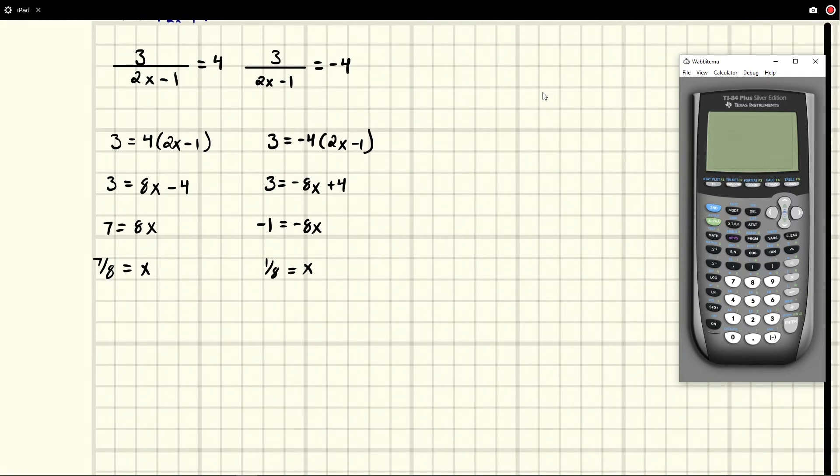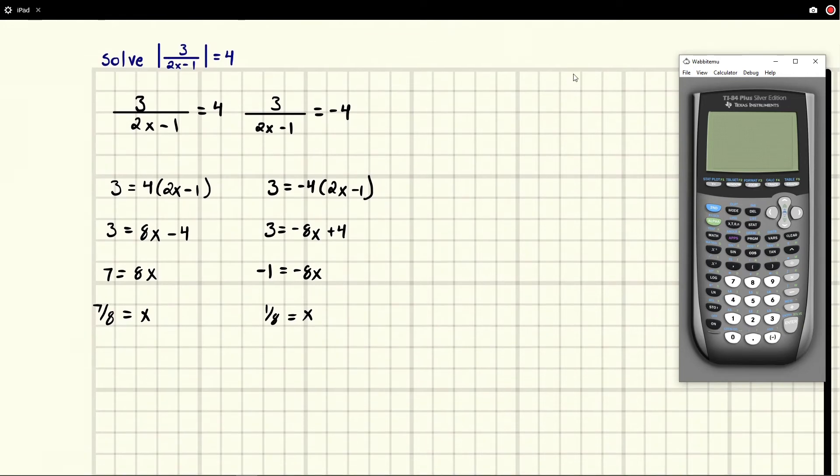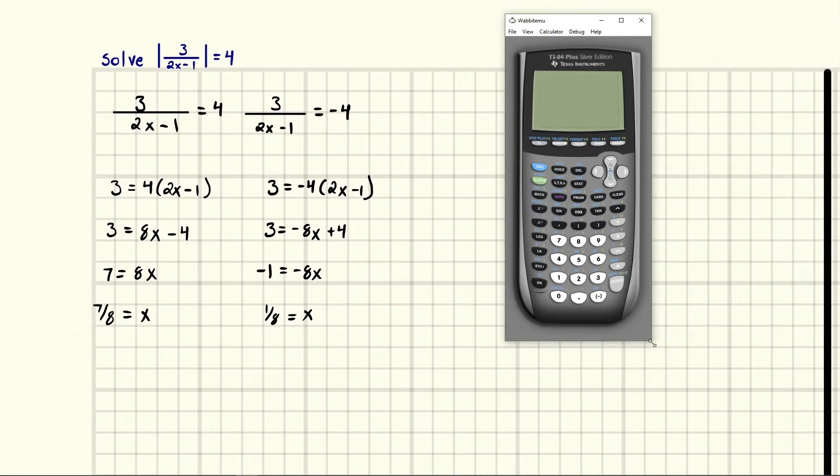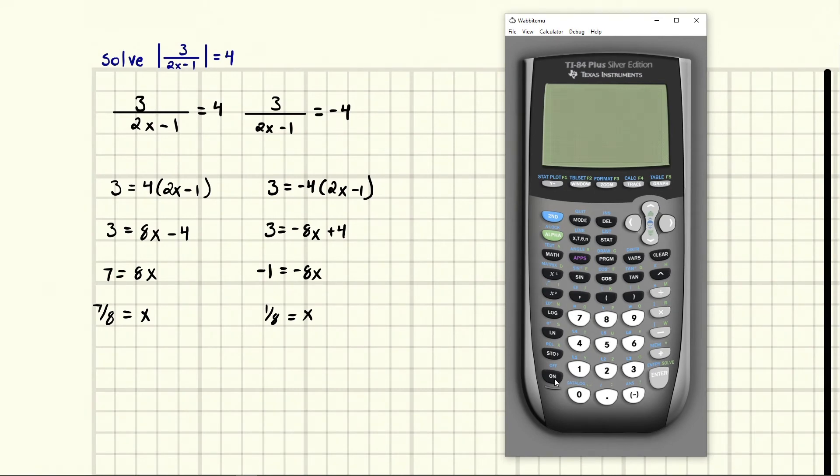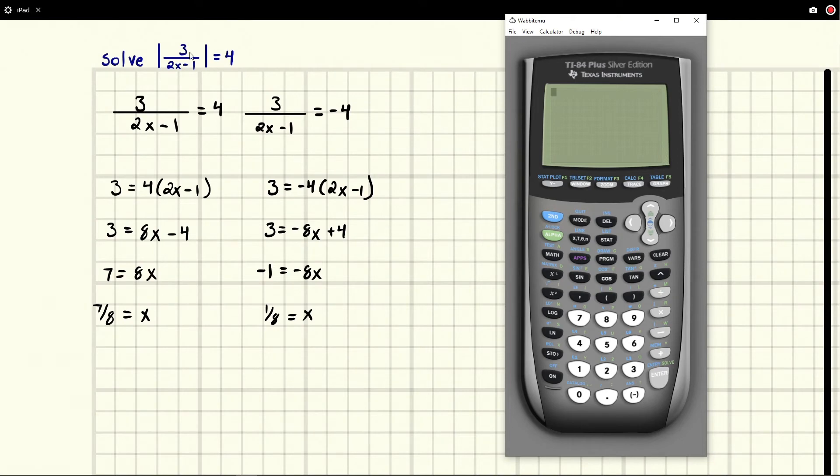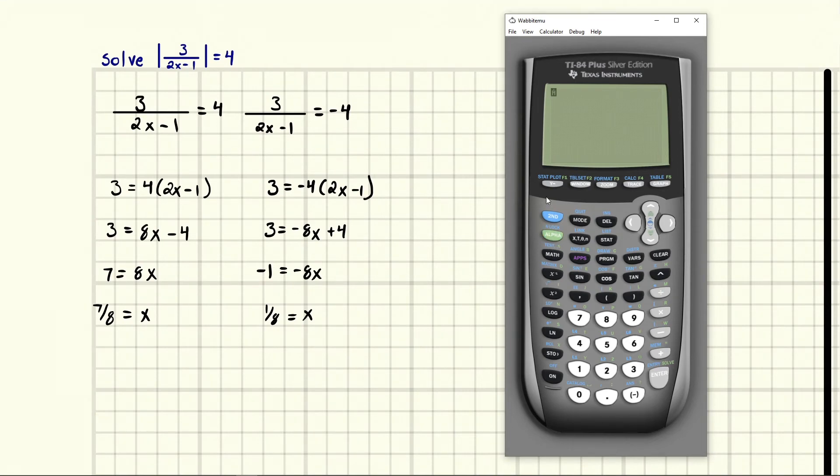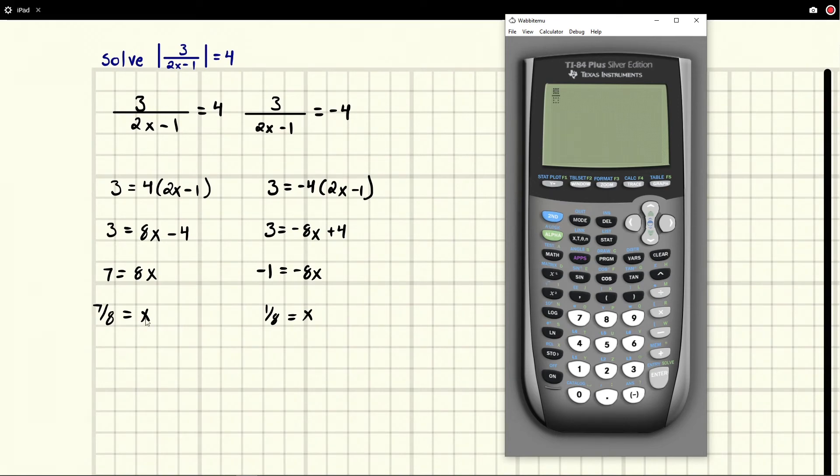So these are our two answers and we can go ahead and check these. To do that let me make this calculator bigger. All we're going to do is simply take our fraction and verify that we get plus or minus 4 when we use these two values. I'm going to use the fraction key, green key F1, to put in a fraction here.